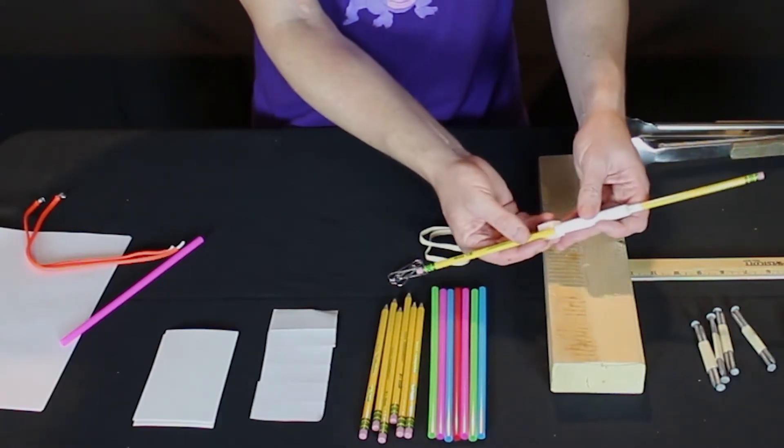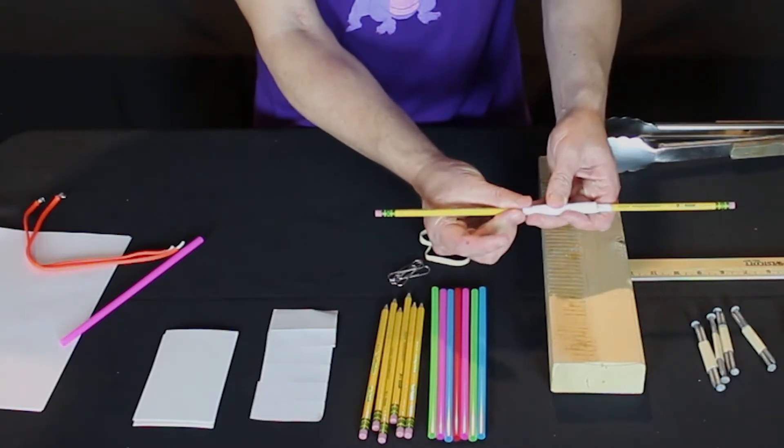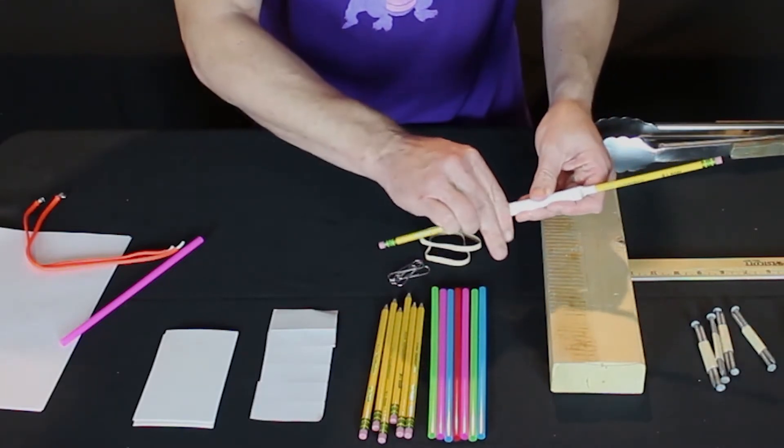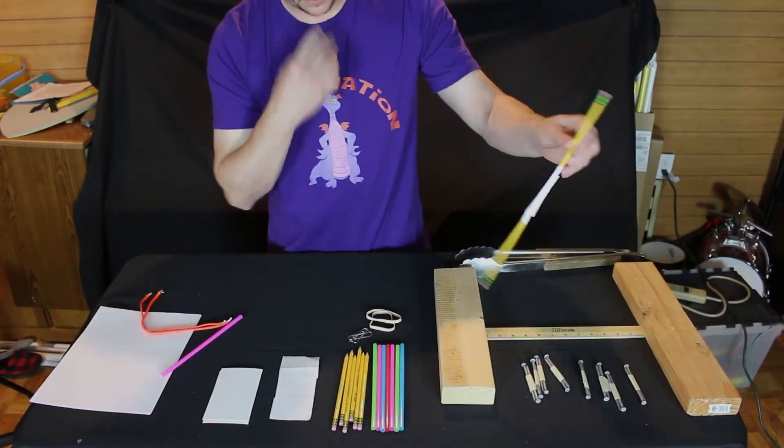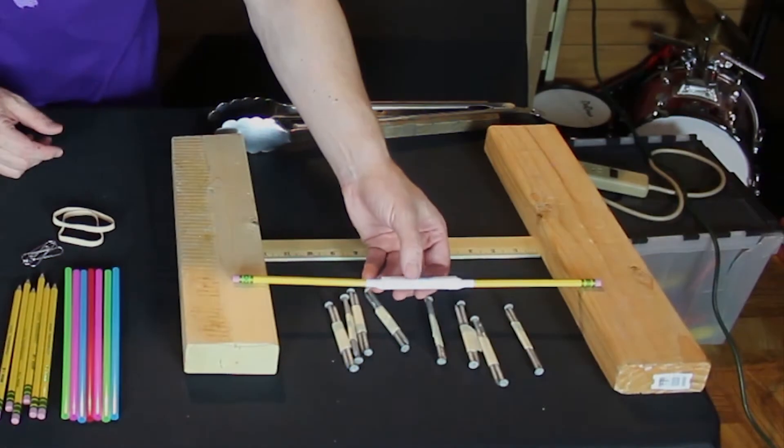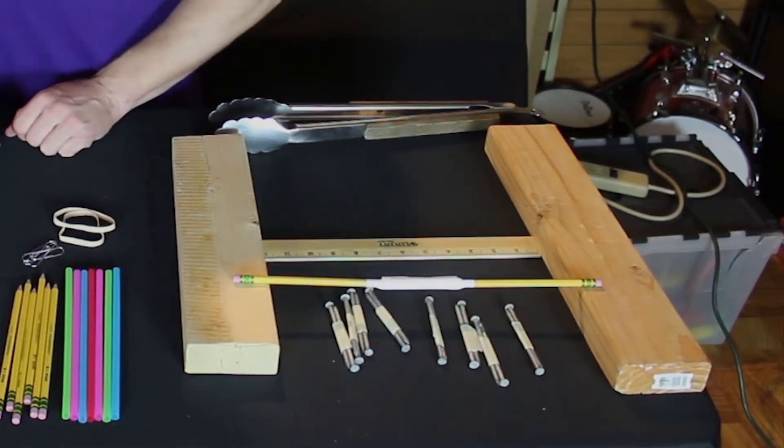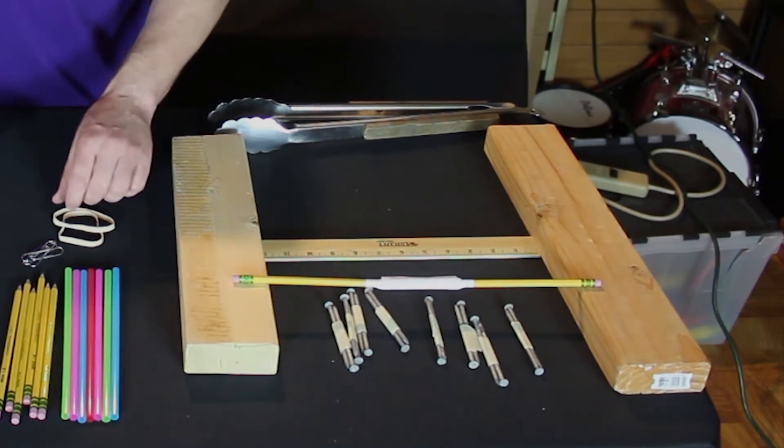Wrap it like that. Wrap it around. Squeeze that sticker on the pencil. So now those don't fall out, and they span the width of the bridge. I'm going to go ahead and do the next three the exact same way.